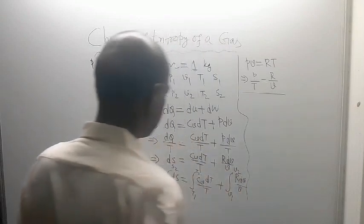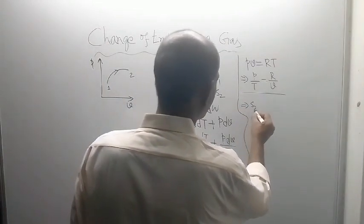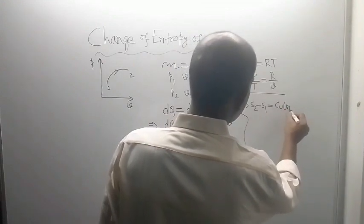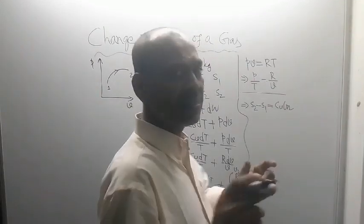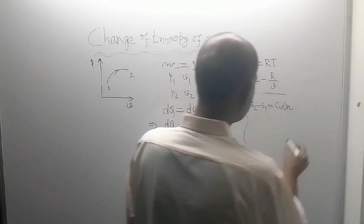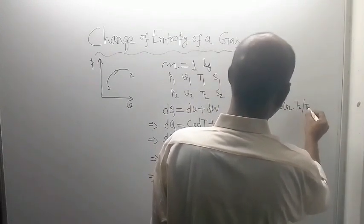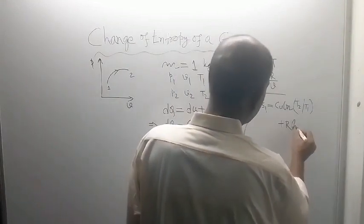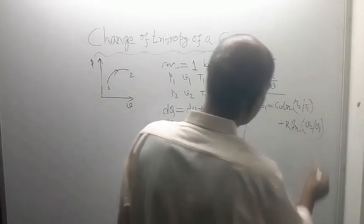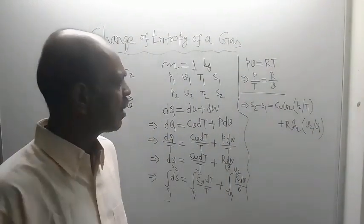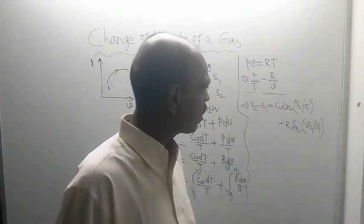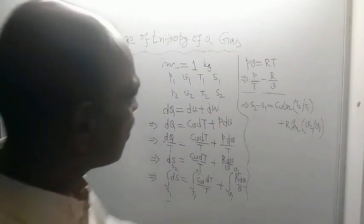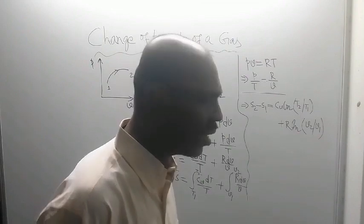After integration, you will get: S2 − S1 = Cv·ln(T2/T1) + R·ln(V2/V1), where ln means log to the base e. So this way, change of entropy can be calculated if temperatures and volumes are known. The same equation can also be expressed in terms of pressure.